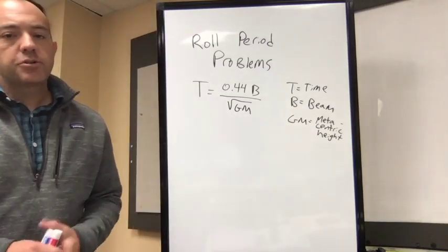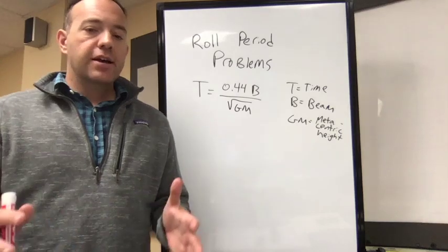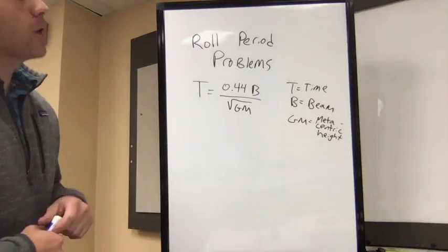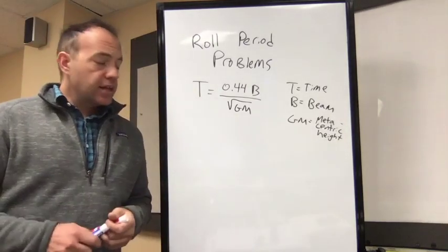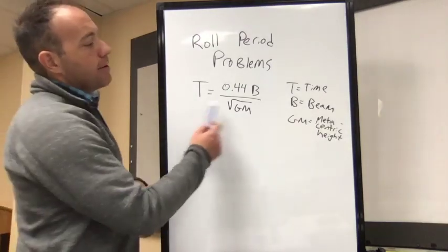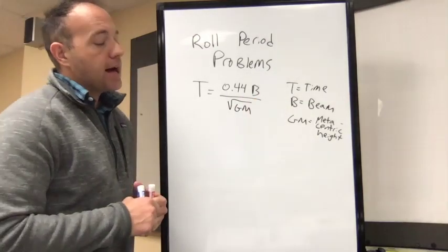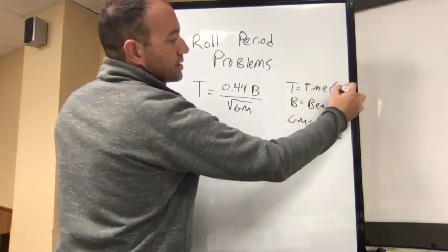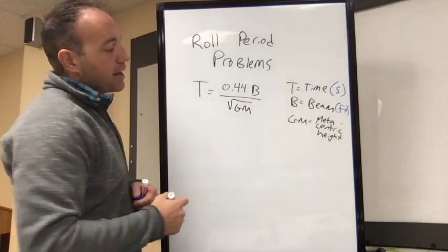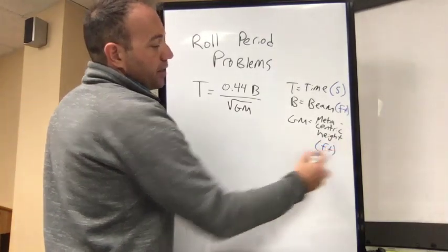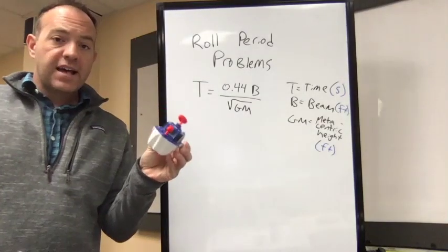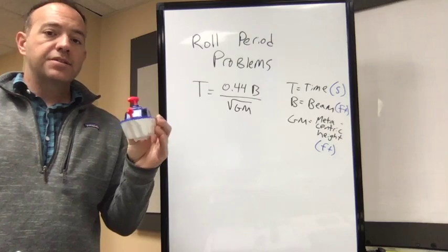One of the first types of problems you could see on a Coast Guard exam for a 100 to 1600 ton license is a roll period problem. The formula to memorize is T = 0.44B / √GM, where T is time in seconds, B is the beam in feet, and GM is the metacentric height in feet.